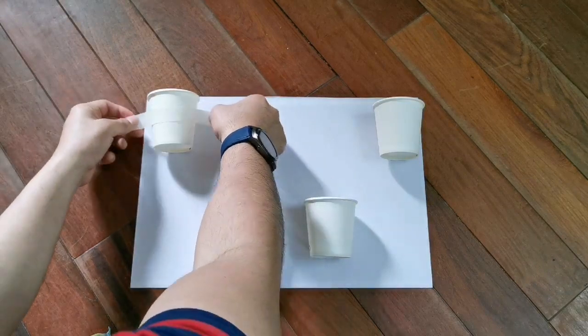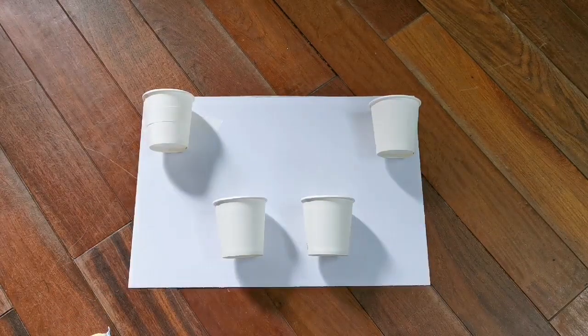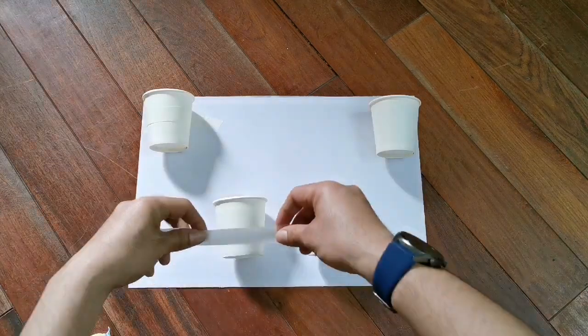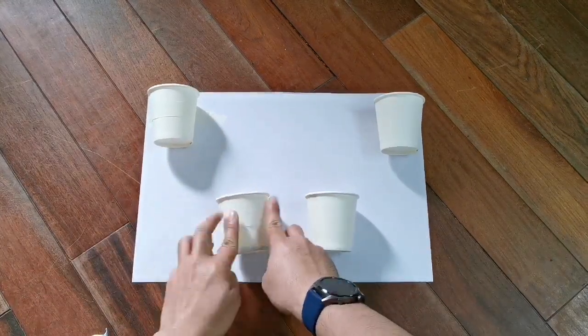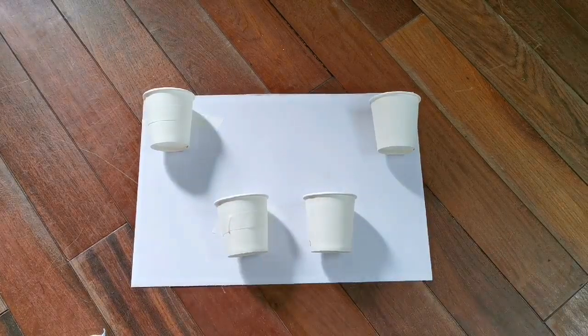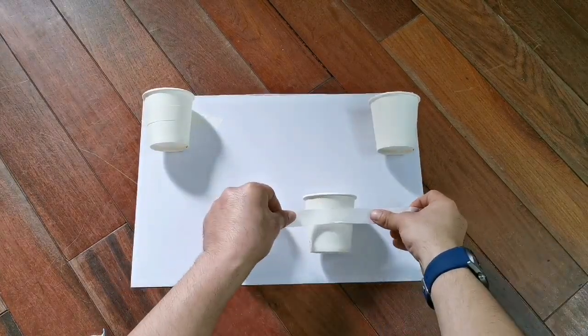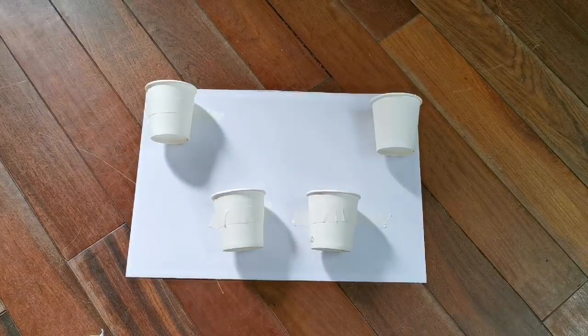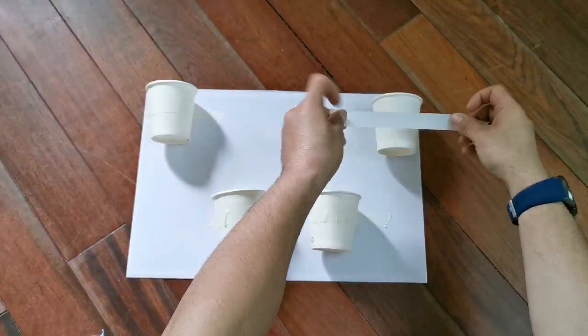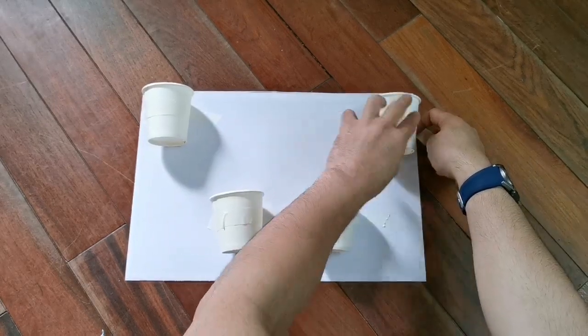The first step of doing this activity is to make our basket pong board. As you can see in the video, I'm taping the paper cups on cardboard paper in the order that I want. You can do yours too in any order that you like, as long as the top of the paper cup isn't covered so that we can easily shoot the ping pong balls inside.